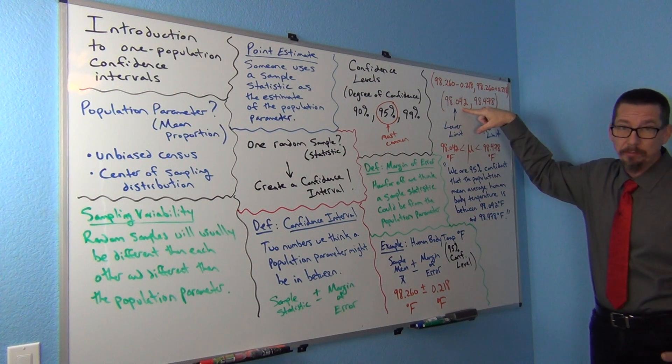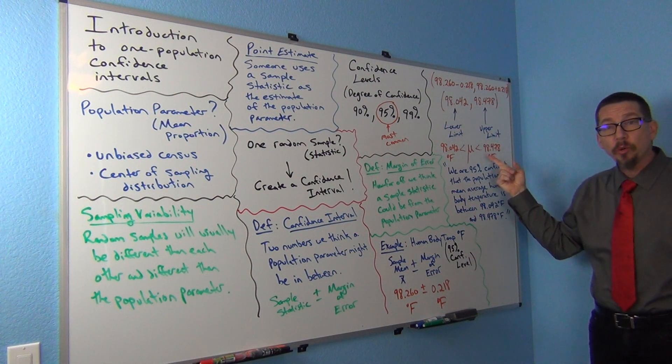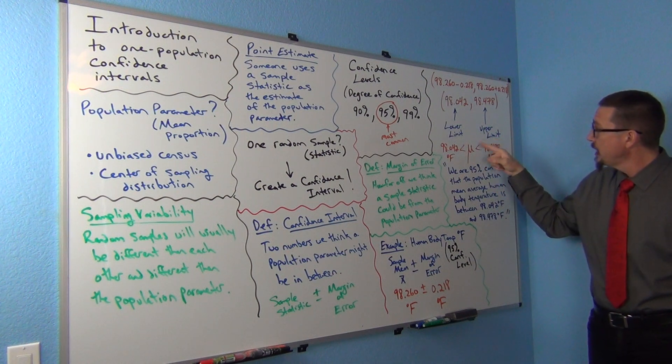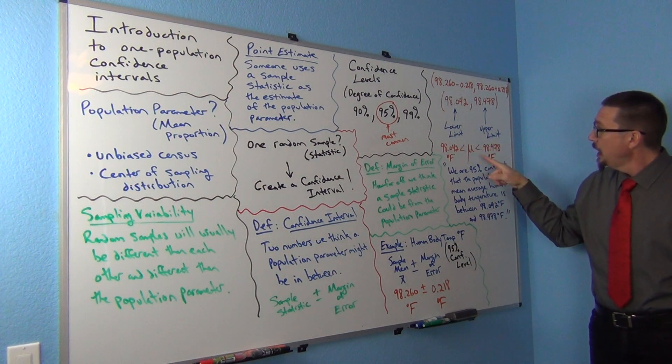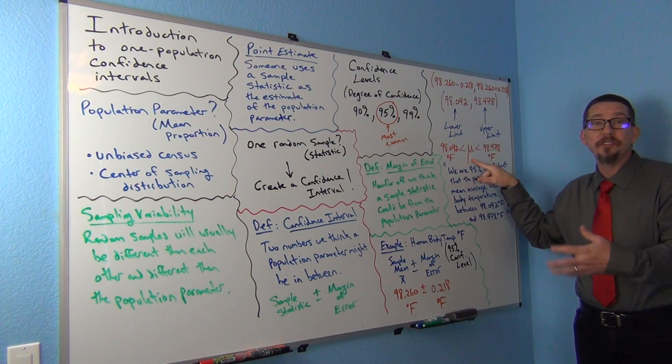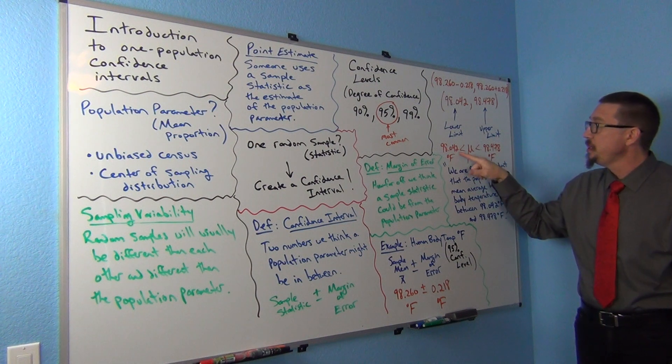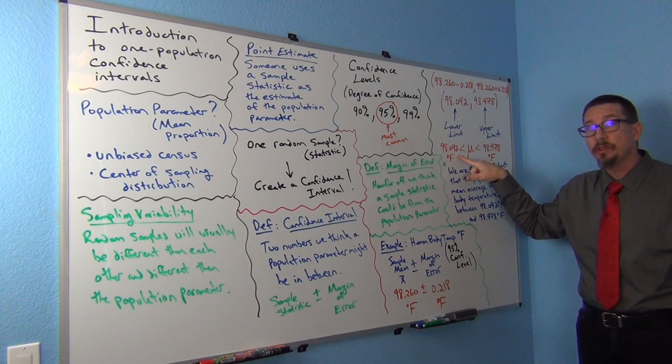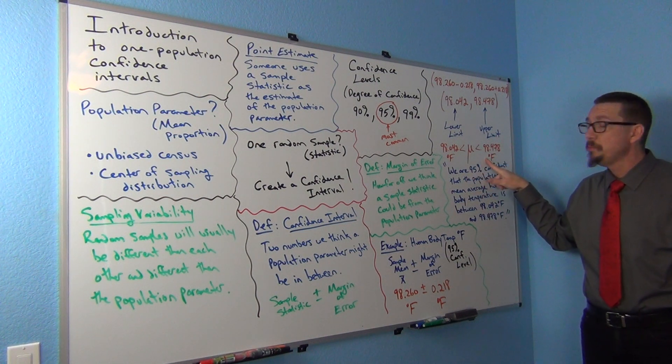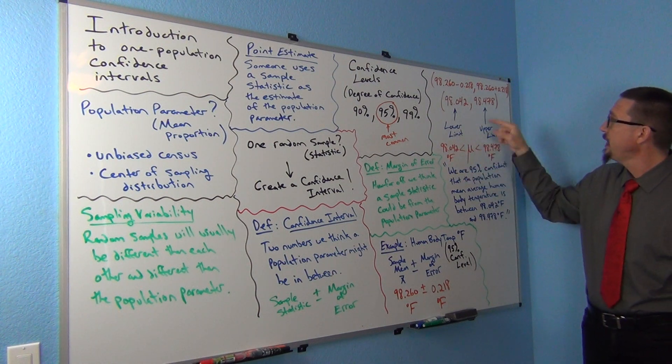Sometimes you'll see this written in inequality notation, so it has the inequality symbols. Also, this is a population mean. If you remember, the Greek letter mu is often used for population means, so some stat books you might see this as mu is between 98.042 degrees Fahrenheit and 98.478 degrees Fahrenheit. It's just another way of writing it, it means the same as this. Usually if it comes off a computer program it'll be written like this.